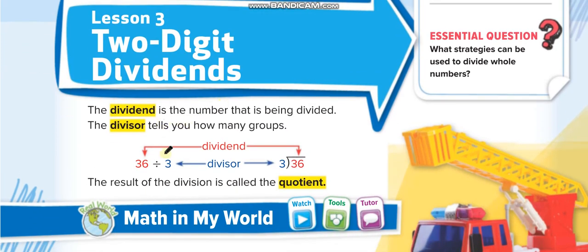First of all, see what is dividend. Like you have a question 36 divided by 3, so the first number, the big number which will come inside this division sign, that is known as the dividend. And the second number, a small number which comes outside here, that is known as the divisor. And the answer of the division, that is known as quotient.